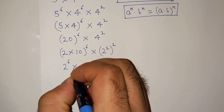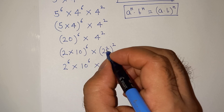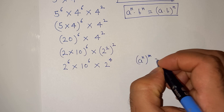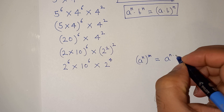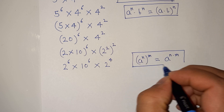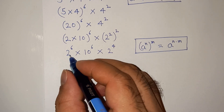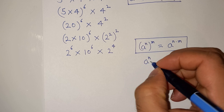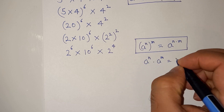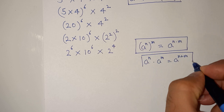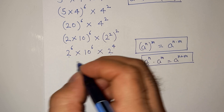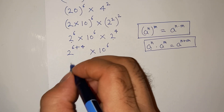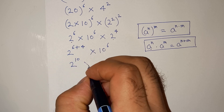As per the exponential rule we just used, we can open the bracket, giving 2 power 6 multiplied 10 power 6, and (2 square) power 2 becomes 2 power 4 according to the rule a power n power m equals a power n times m. So we now have 2 power 6 multiplied by 2 power 4, and applying a power n multiplied by a power m equals a power n plus m, the base is 2, giving us 2 power 6 plus 4 multiplied 10 power 6.